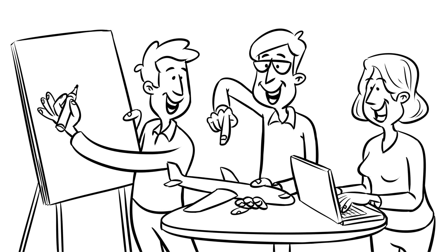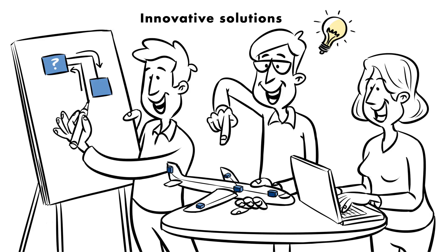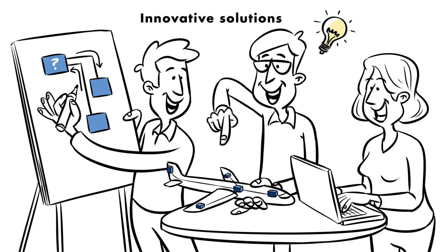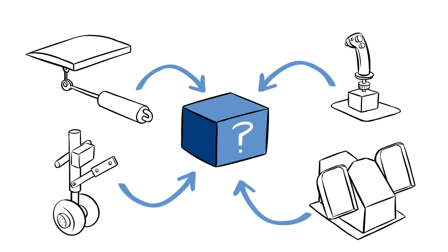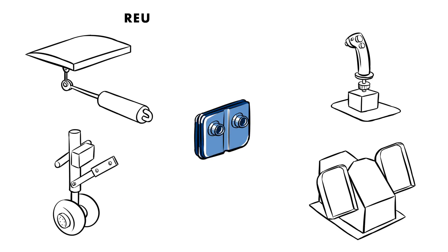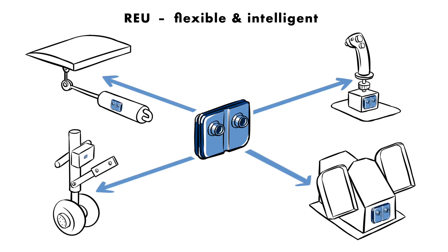Liebherr Aerospace is continually striving to develop new innovative solutions for its customers. What would a device look like which has all of these functionalities? The REU is our smart solution, a device which is flexible and intelligent, suitable for various aircraft applications.